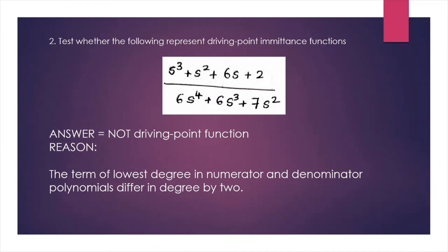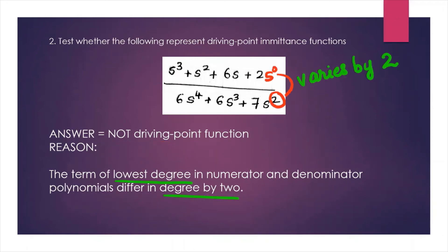For the second example, this also is not a driving point function because the terms of the lowest degree in the numerator and denominator polynomials differ in degree by 2. They can only have a maximum difference of 1 or 0.